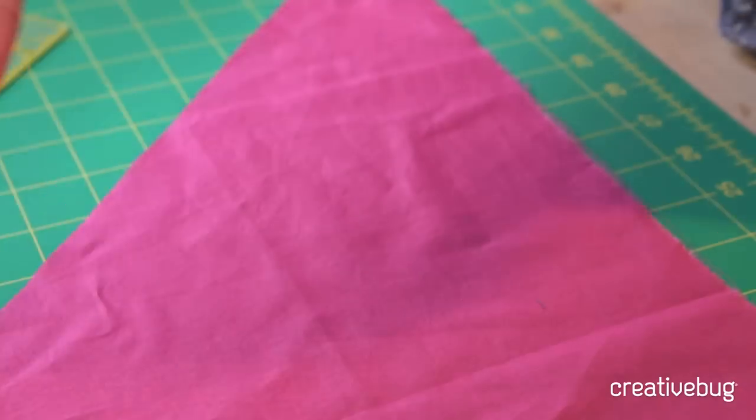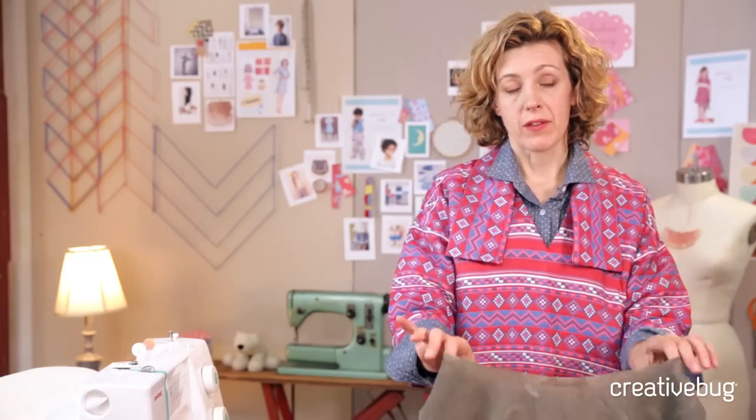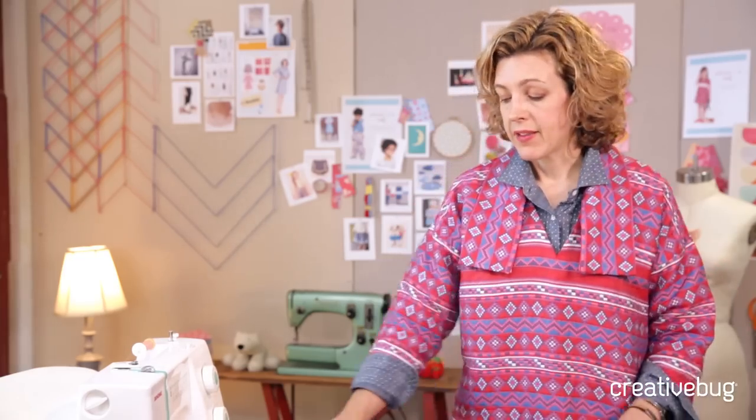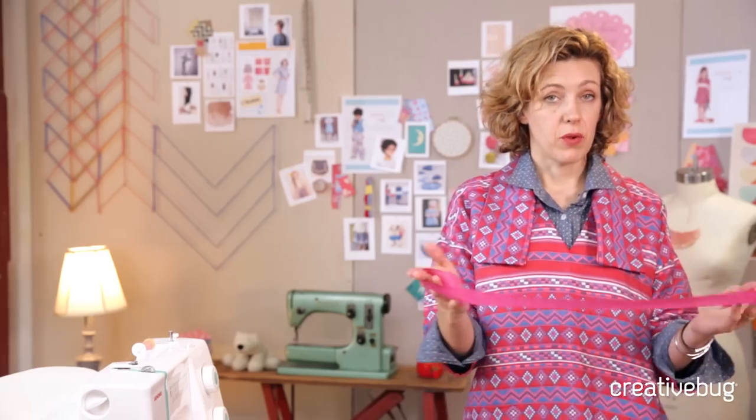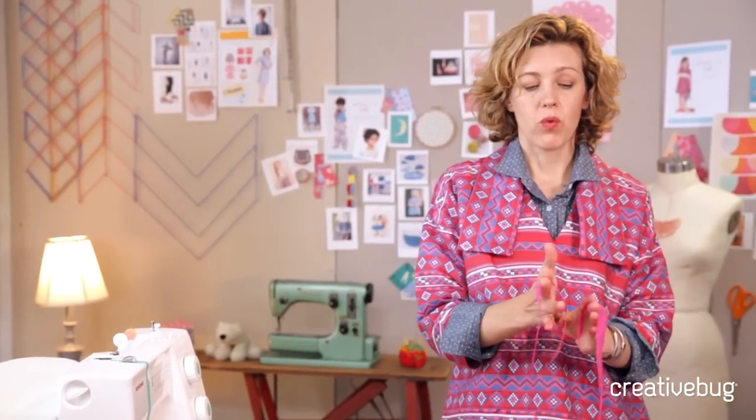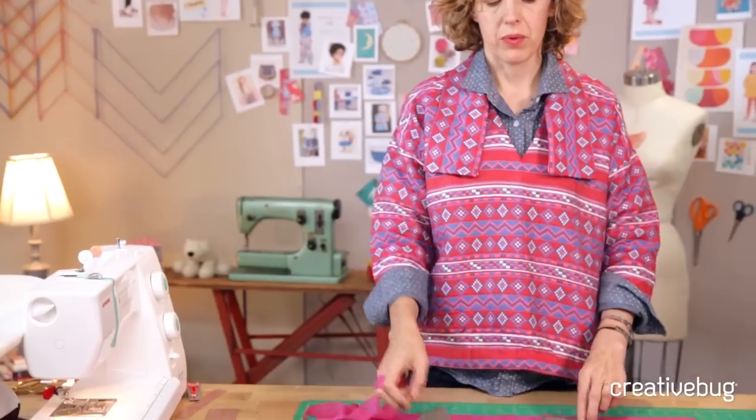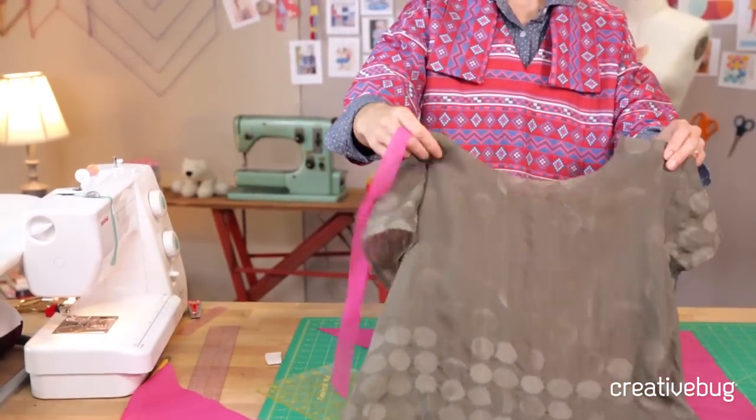We also want to be sure that the bias is long enough to get around this neckline. If your bias isn't long enough, you can always sew two pieces of bias together to get a long enough strip. But otherwise, it's really nice if you can get it in one piece so there's only one seam making it into a loop. So keep that in mind when you're cutting your bias.